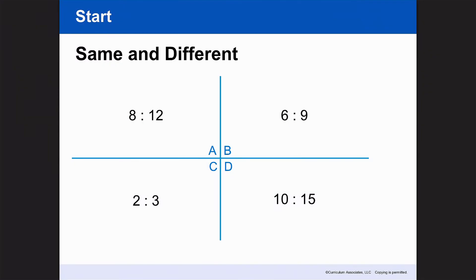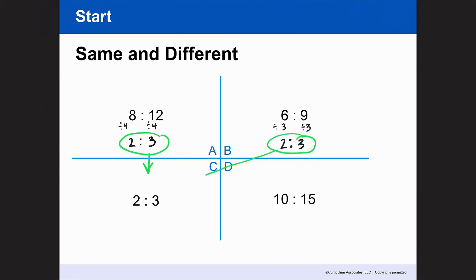I'm going to look at my first one and see how many times a number can go into both of these evenly to make an equivalent ratio. I know that 4 can go into both of these numbers, so dividing by 4 gives 2 to 3. That's the same as C. Now let's try the B box. I know that 3 can go into both 6 and 9, and that also becomes 2 to 3 — the same as C.